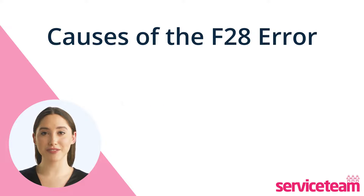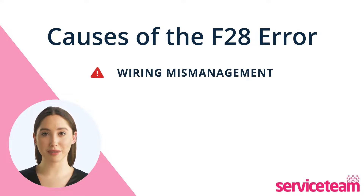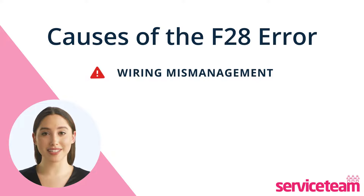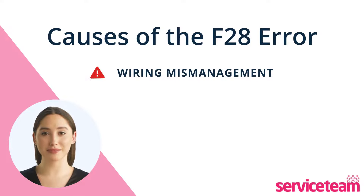If wires in a heating system are improperly connected or damaged, wiring mismanagement can disrupt communication between essential components like the gas valve and PCB, resulting in an F28 error.